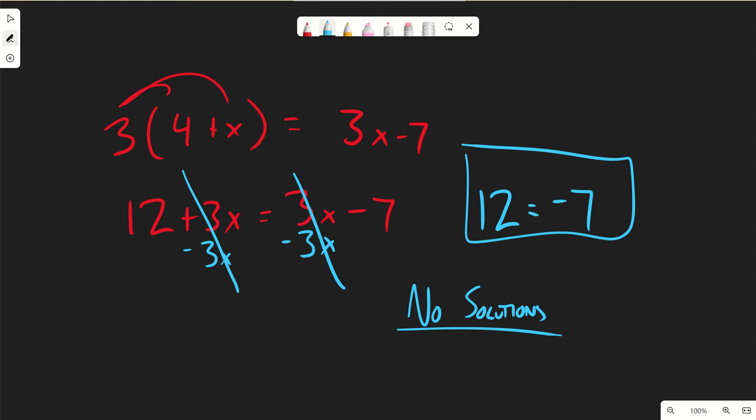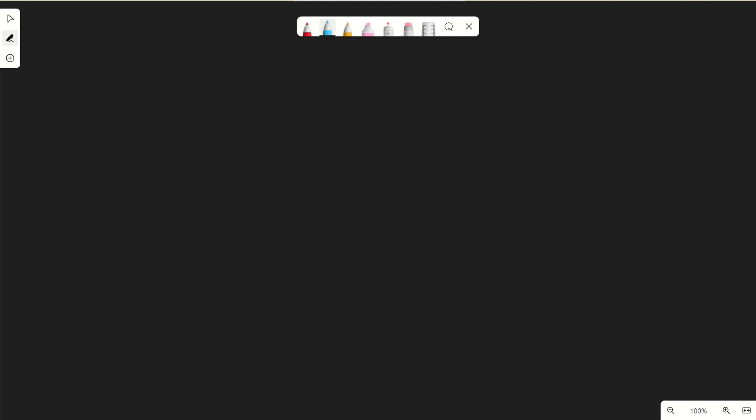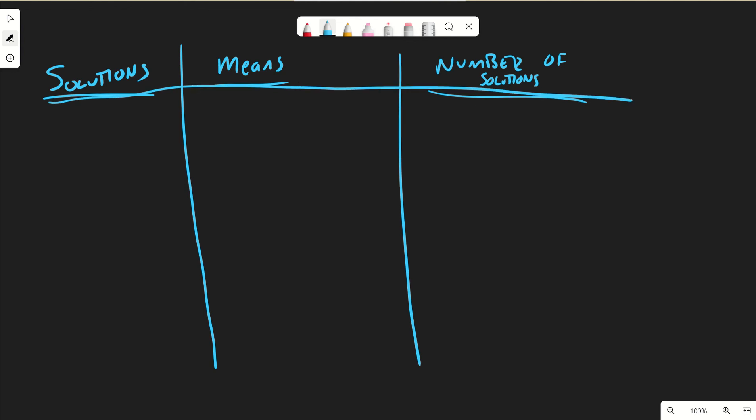Okay, so we're going to make a little table to help us in our understanding. We're going to learn three rules for solving equations. First, we're going to talk about our solutions. We're going to talk about what that means and the number of solutions. So solutions, what that means for us, and then the number of solutions that exist.